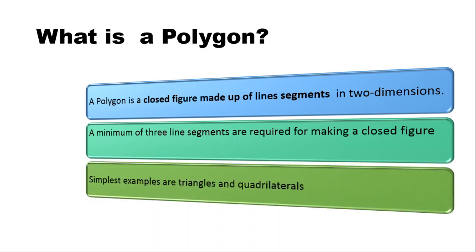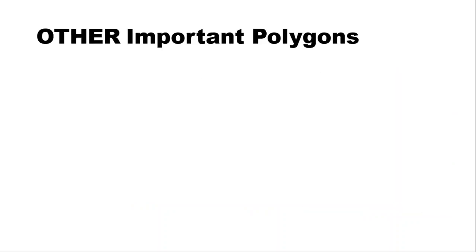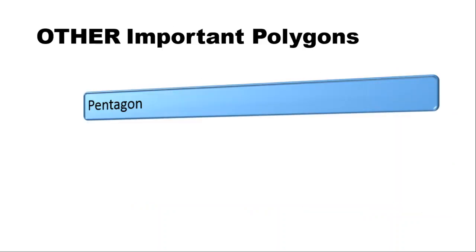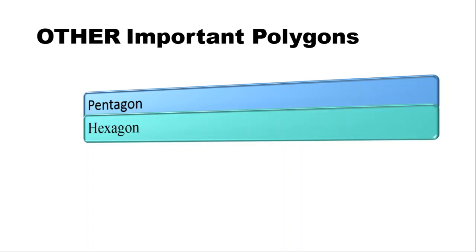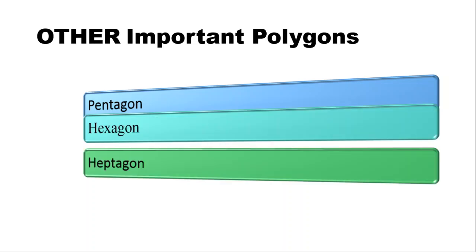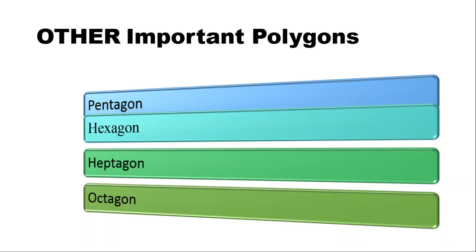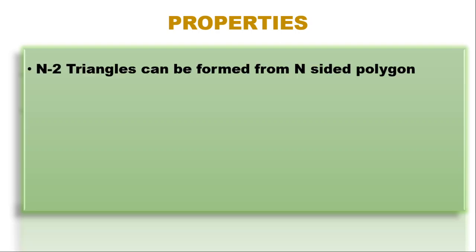The simplest examples are triangles, which have three sides, and quadrilaterals, which have four sides. Other important polygons are the pentagon, which is a five-sided closed figure; hexagon, which is a six-sided closed figure; heptagon, which is a seven-sided closed figure; and octagon, which is an eight-sided closed figure.